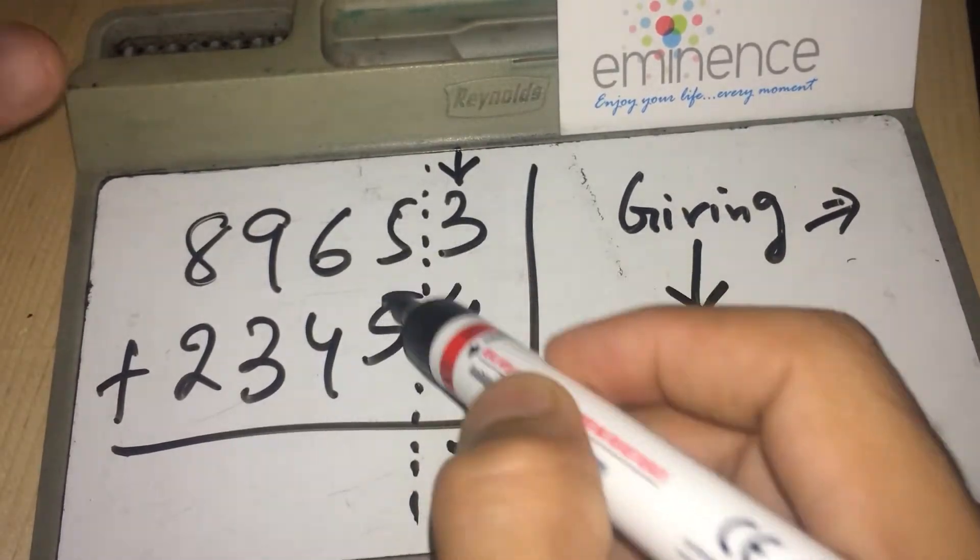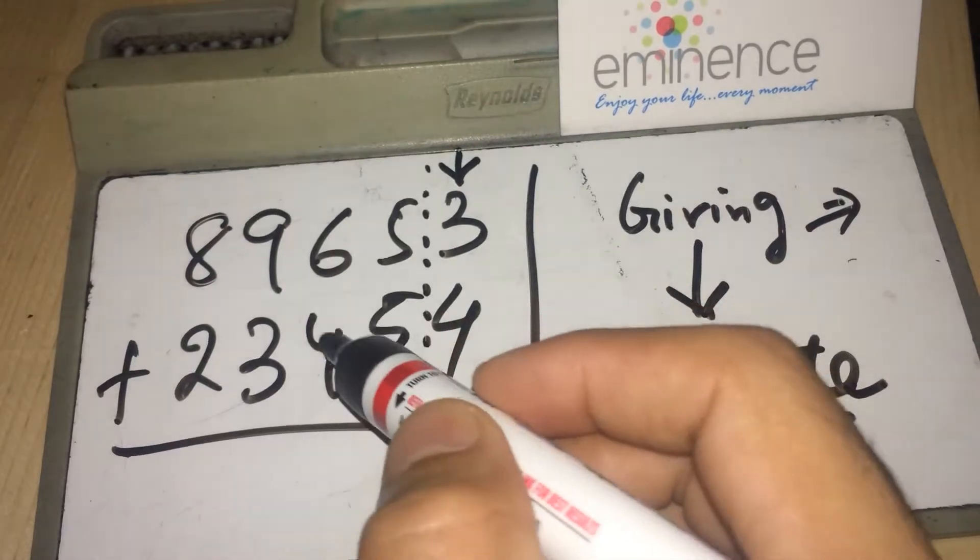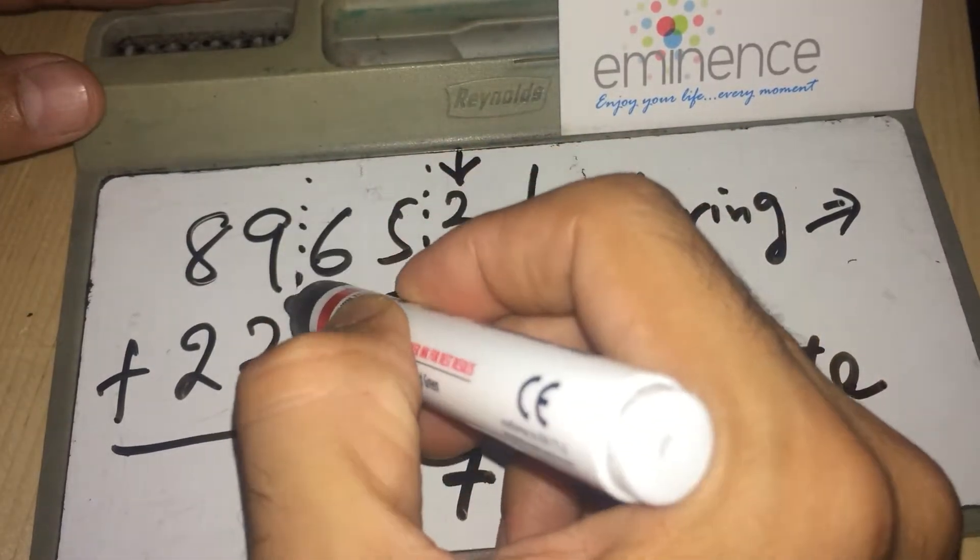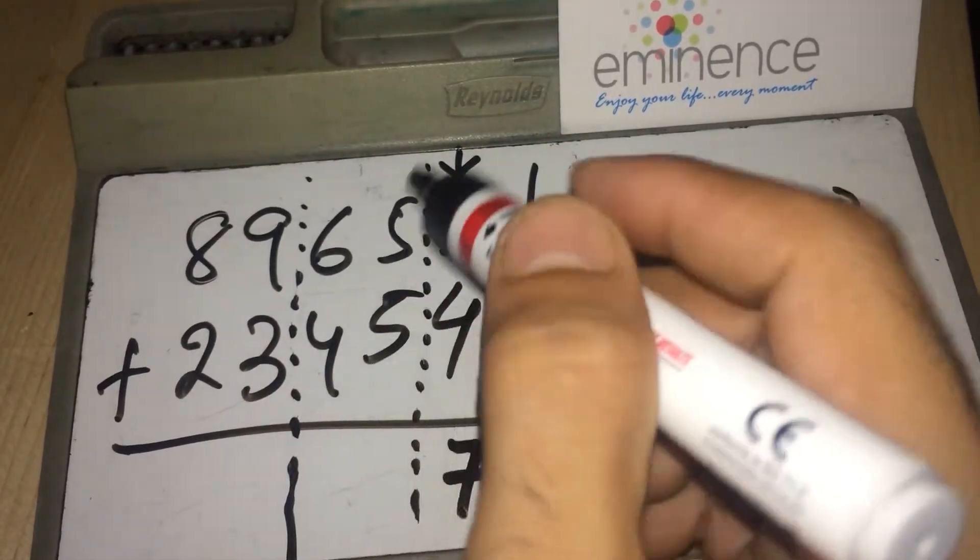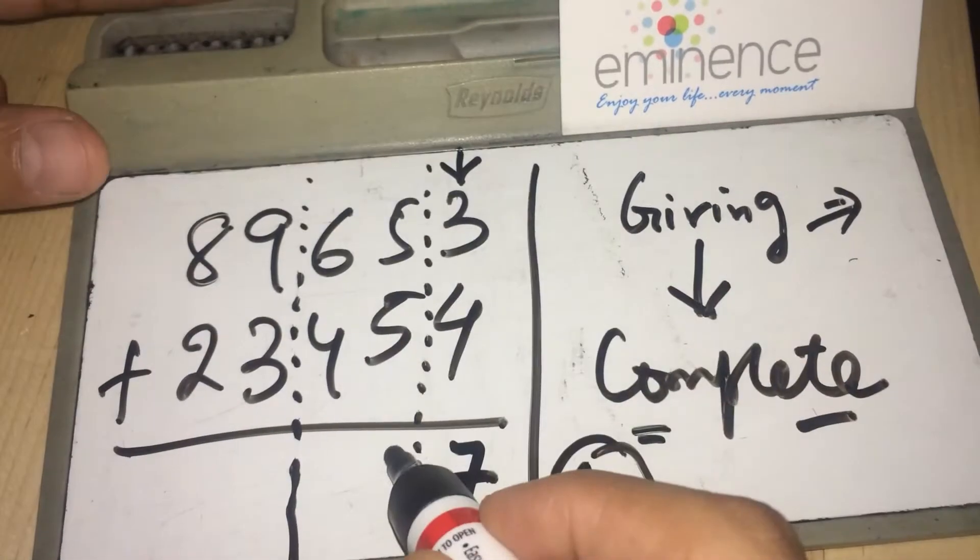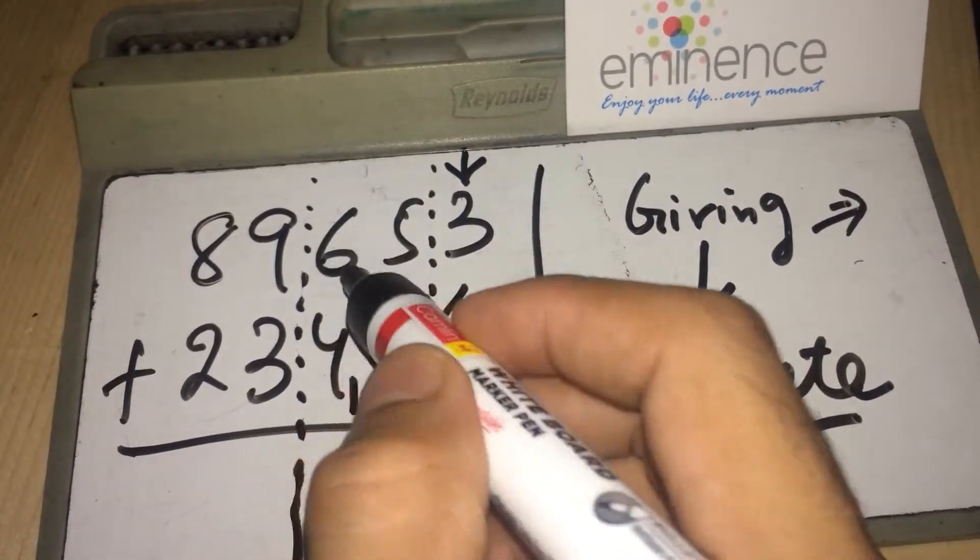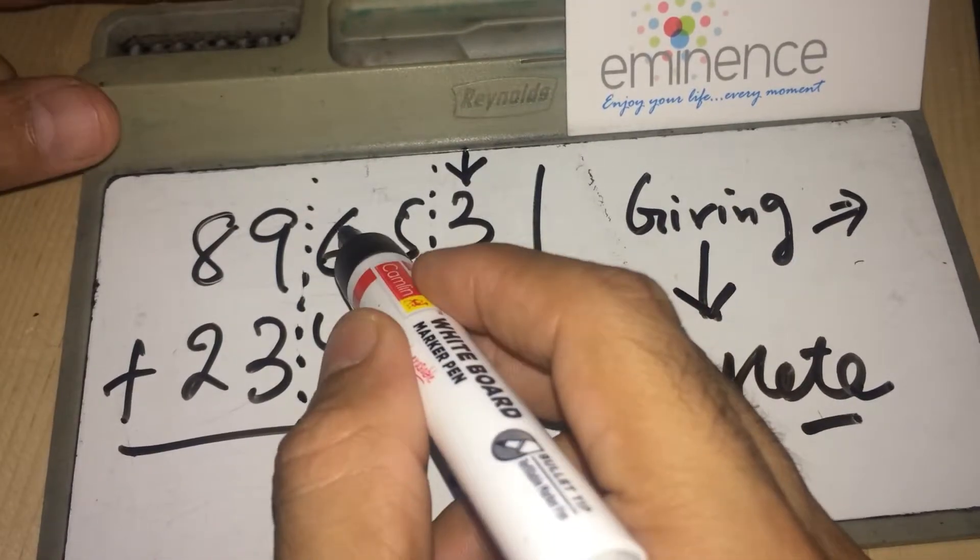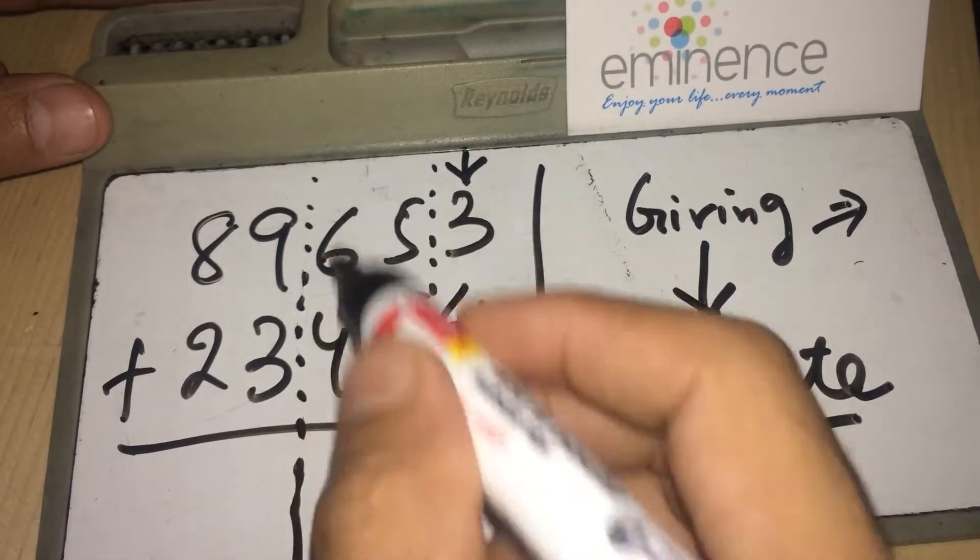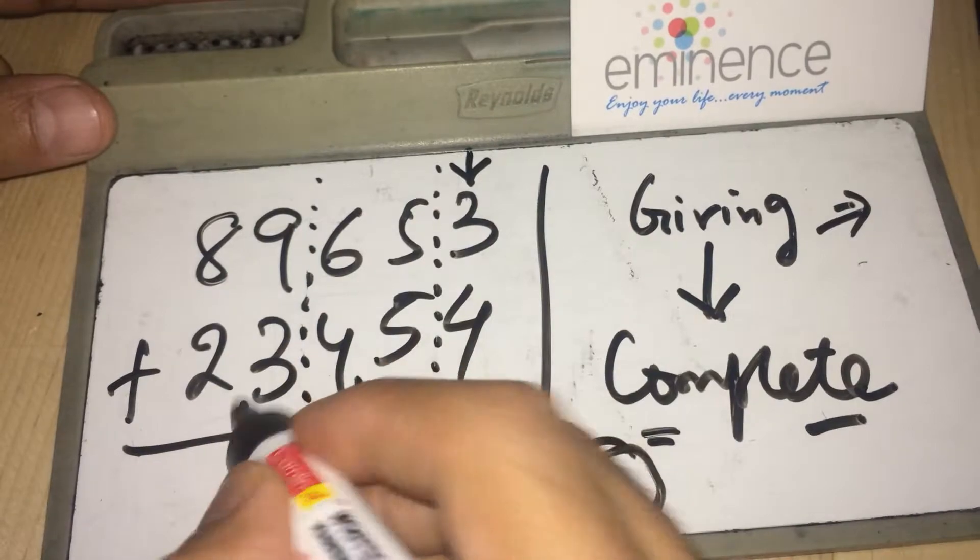Now, 5 plus 5 together becomes 10. We all know 6 plus 4 becomes 12. Such cases also, you can try both of them. Doesn't matter. Whether 5 gives 5, remains 0, take 1 or 6 plus 4, then whatever. 4 gives all of it to 6 and then what remains is 1, carry forward 1.